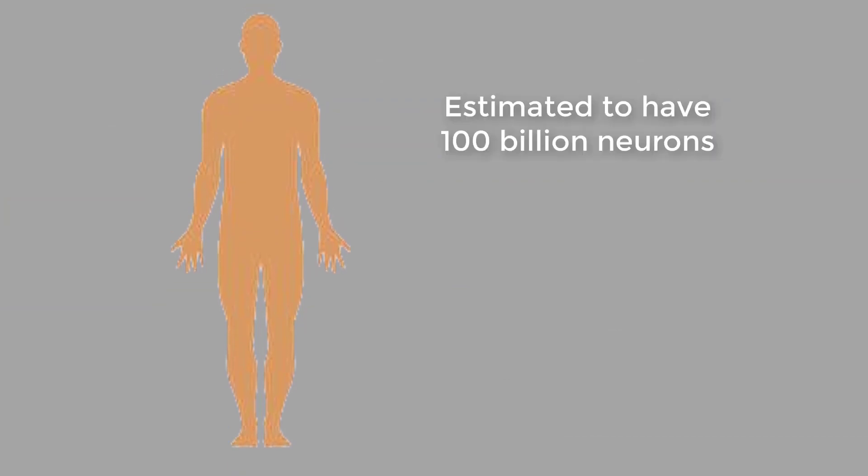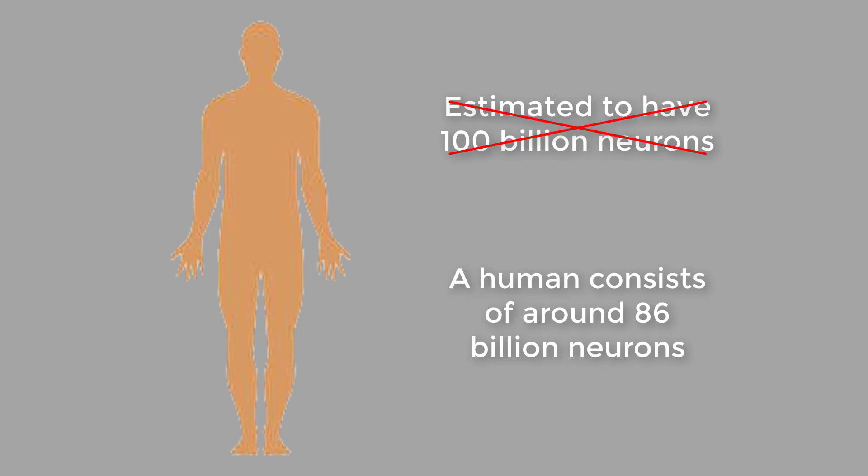According to many estimates, it was said that the human body consists of around 100 billion neurons. However, investigative work on the subject was carried out and it was concluded that the number of neurons in one individual is around 86 billion, which is a huge difference from the earlier estimated number.